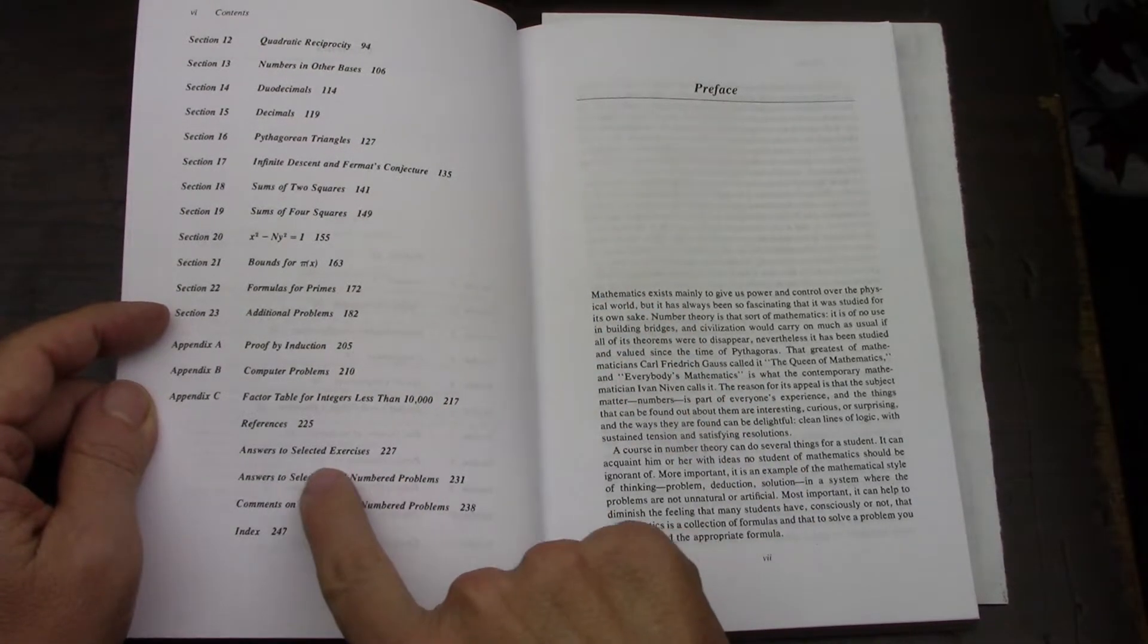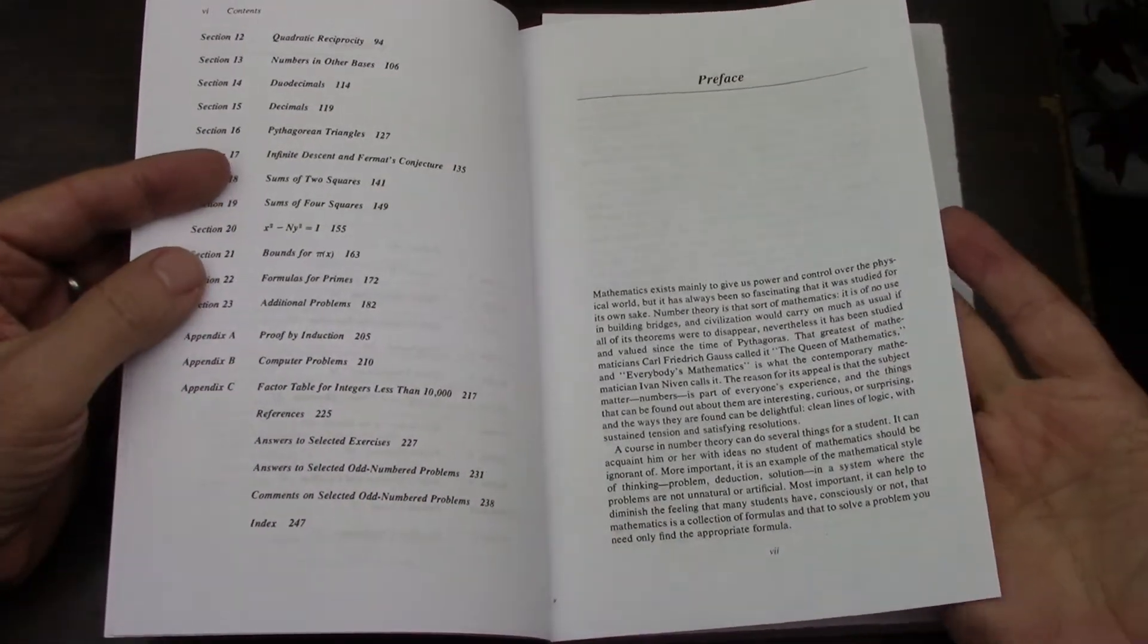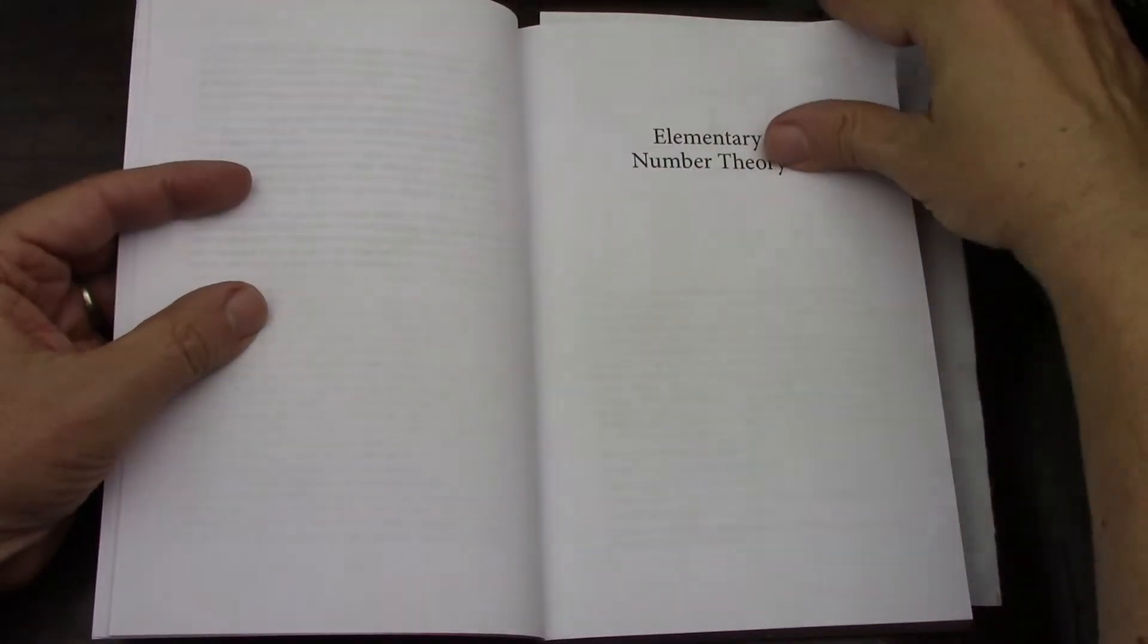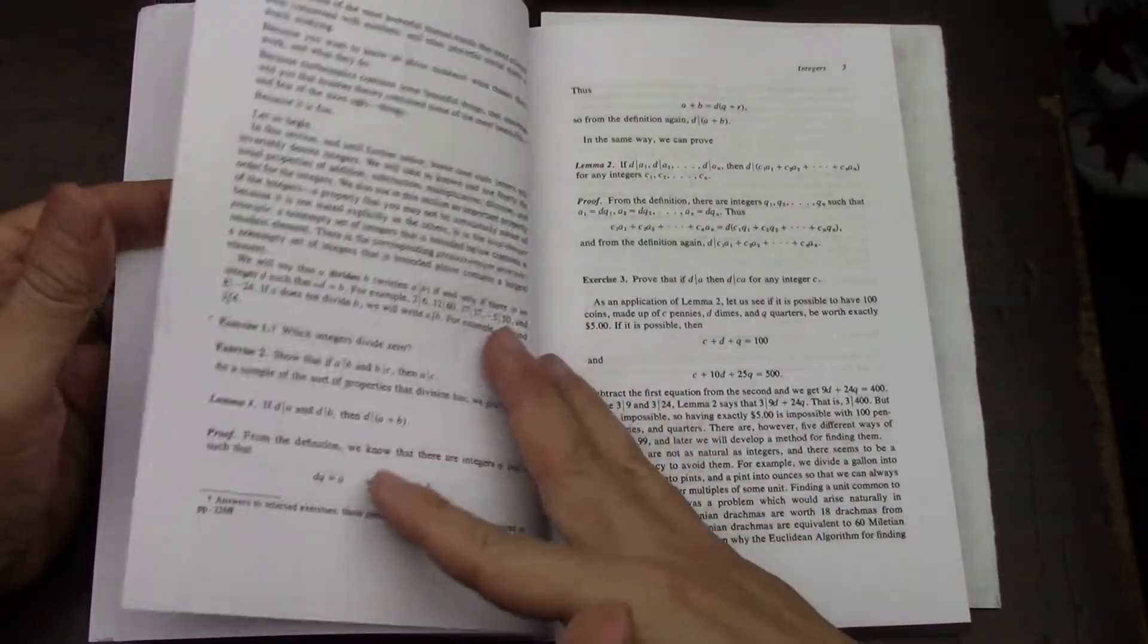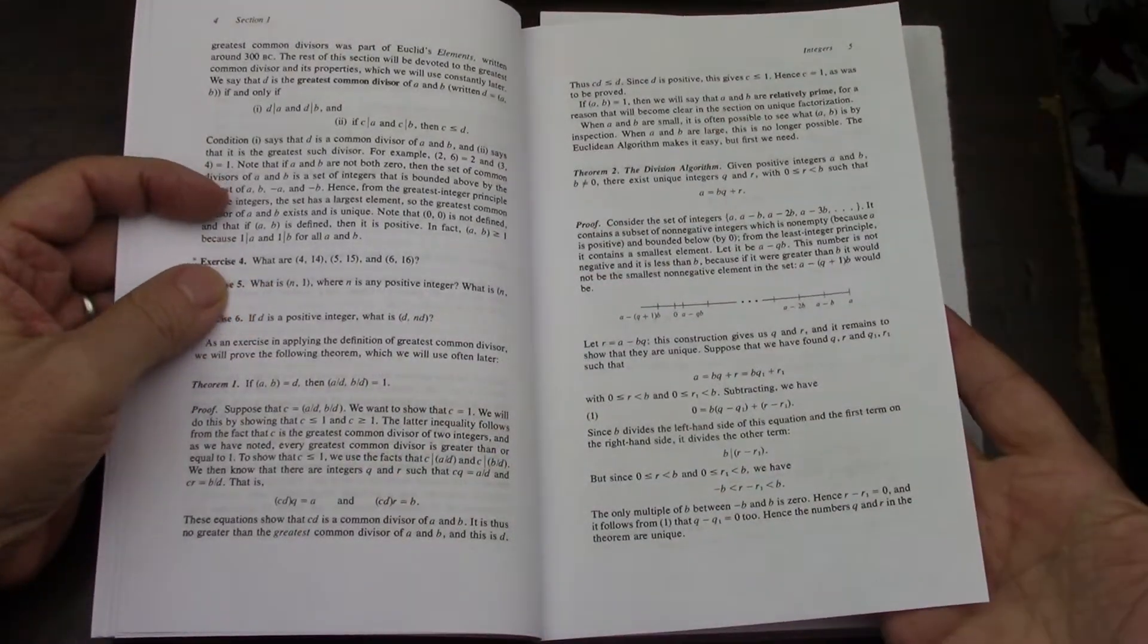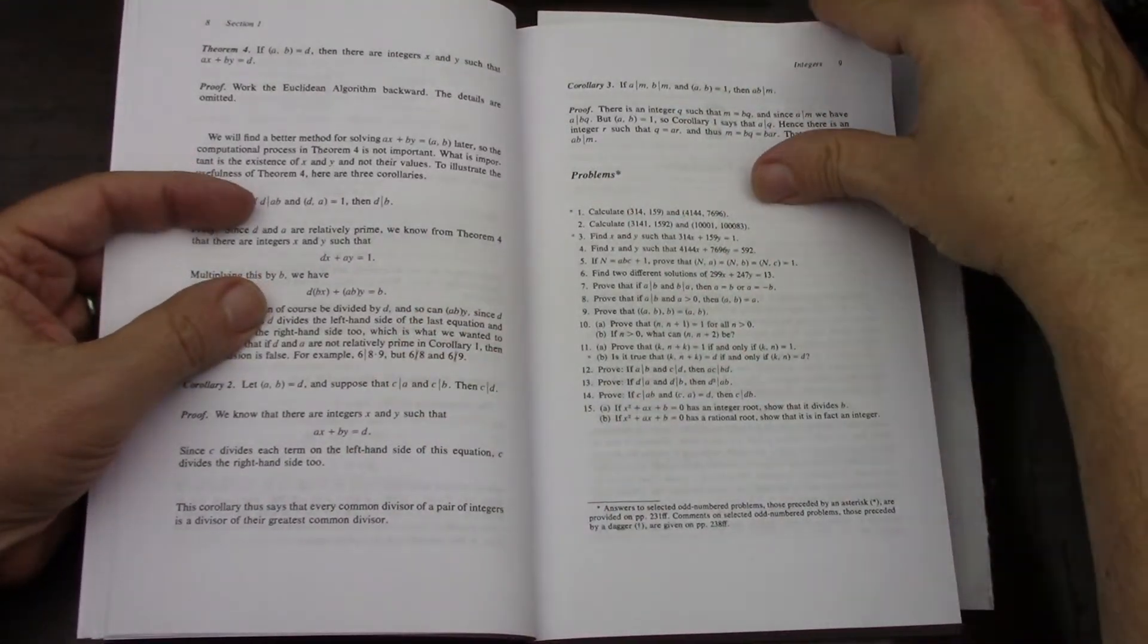Most importantly, it's got answers to selected exercises, and I really like that. So I'll just page through the book briefly, and it is really accessible, easy to read. Just very easy to read. Clear terminology. I think this is the perfect get-back-to-number-theory book.